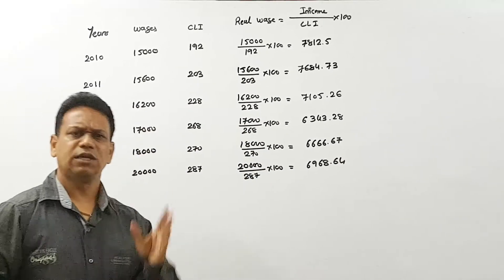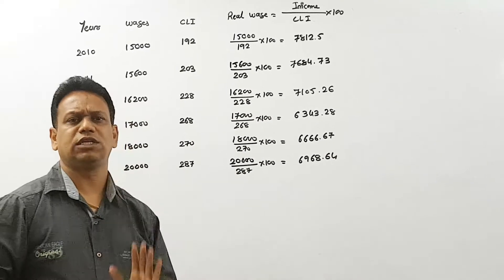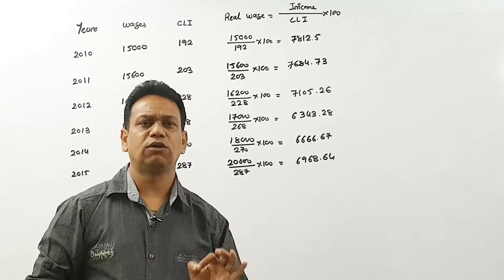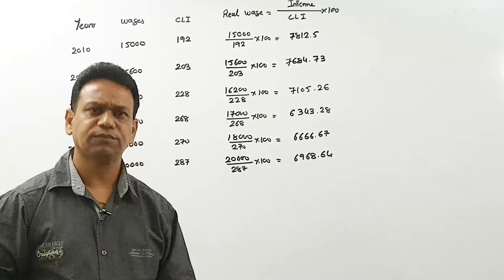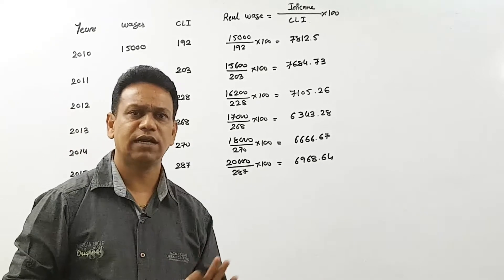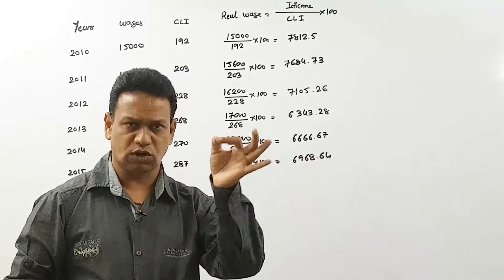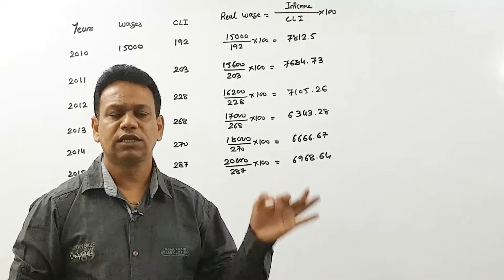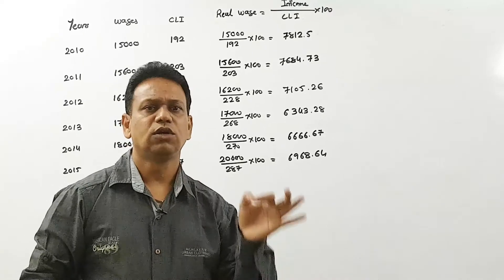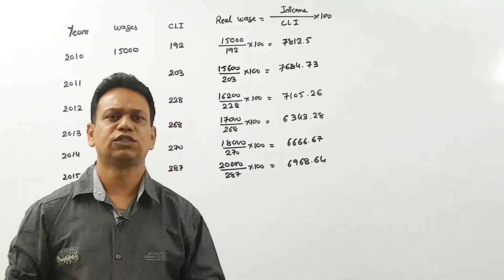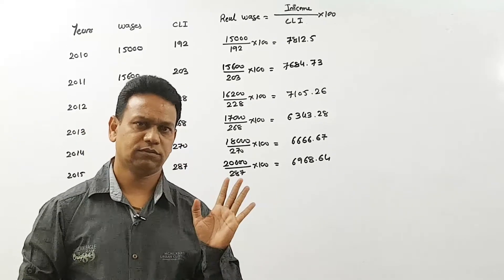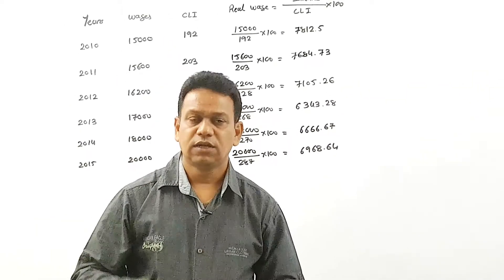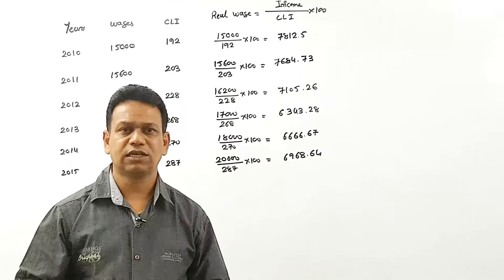So this is the way — all the calculations depend on the simple formula. Whenever they ask to find out the real salary or real wages, the formula is: actual salary (income) divided by cost of living index number into 100. This formula is used to obtain real wages for any year. I hope this seems very easy, dear friends.